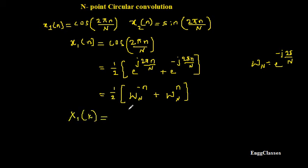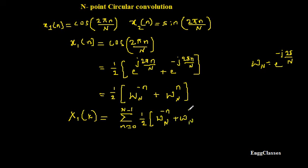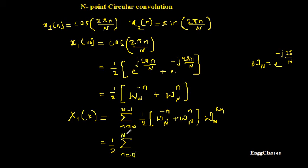Let us find X1(k). Using the DFT formula: X1(k) = Σ(n=0 to N-1) x1(n) * W_N^(kn). Substituting x1(n) = (1/2)[W_N^(-n) + W_N^n], this gets multiplied with W_N^(kn). Taking 1/2 as a constant outside, this becomes a summation of two terms. Taking n common, the first term gives W_N^((k-1)n) and the second gives W_N^((k+1)n).